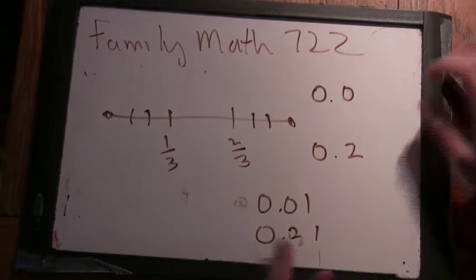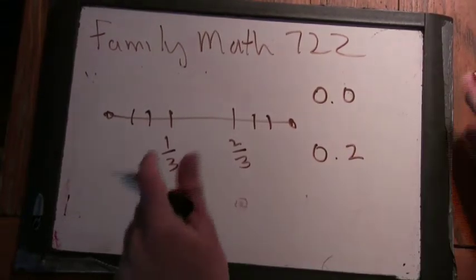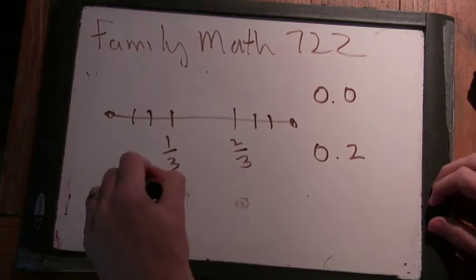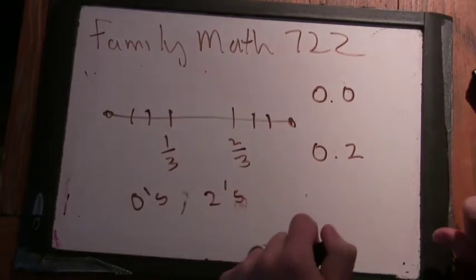So what you're left with at the end of this process is all the numbers in base 3 that only have zeros and twos. Hmm. Interesting.